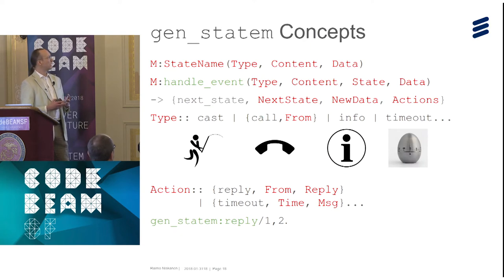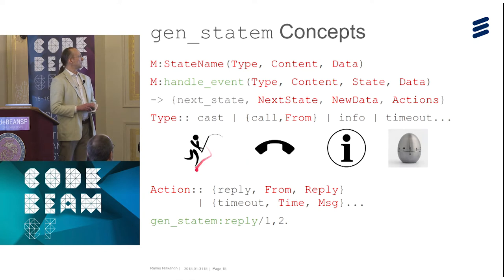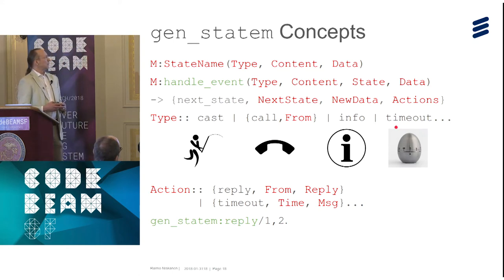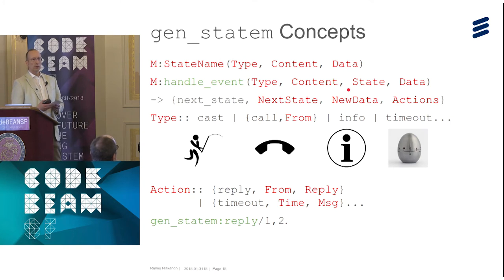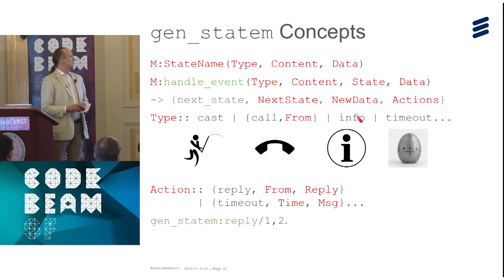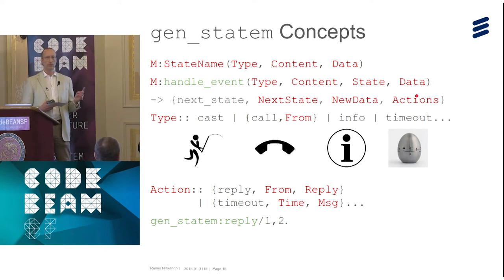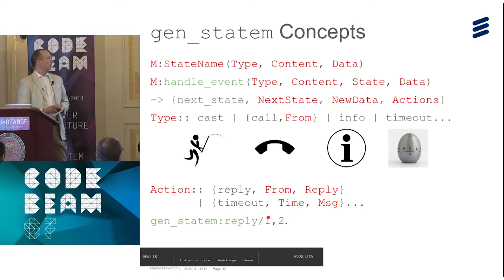gen_statem looks a bit differently. Here we have one callback that takes the class of the event as a type — cast, call, info, timeout, and at least one more. There is also the concept of a callback mode: you select the callback mode and get all your callbacks either state-specific or state-non-specific, with the state as an argument instead. In state-specific mode the state must be an atom; in handle_event mode the state can be any term. The return value both sets the next state, updates the data, and provides a list of actions. Among these actions are replies — you can make multiple replies, and all show up in the sys trace.